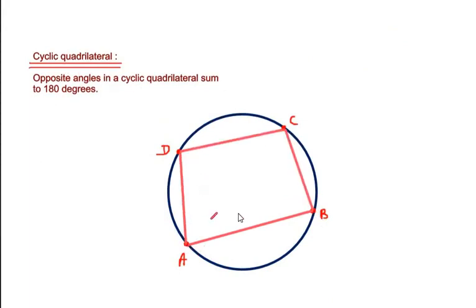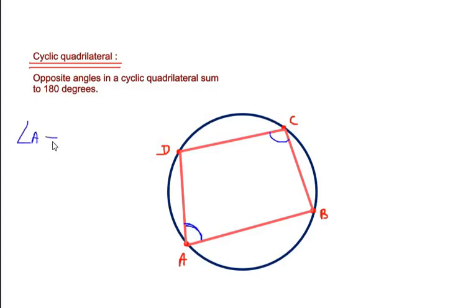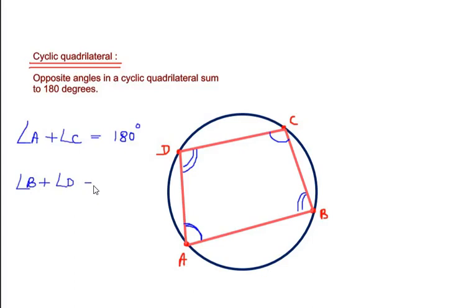The quadrilateral is formed by connecting C to D and D to A — this is a cyclic quadrilateral with all vertices on the circle. According to the theorem, opposite angles in a cyclic quadrilateral sum to 180 degrees. Angle A and angle C are opposite, so they add to 180 degrees. Similarly, angle B plus angle D equals 180 degrees.